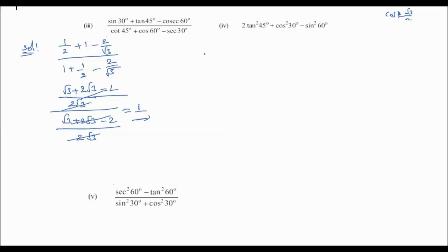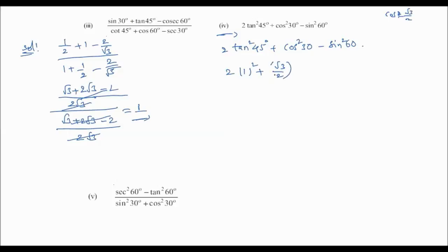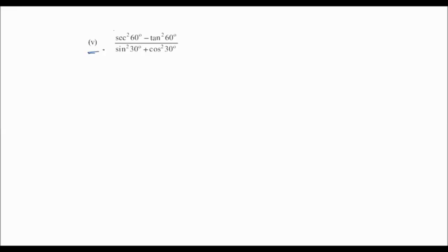Fourth question: 2tan²45 + cos²30 − sin²60. tan45 = 1, so 2×1² = 2. cos30 = √3/2, so cos²30 = 3/4. sin60 = √3/2, so sin²60 = 3/4. We get 2 + 3/4 − 3/4... wait — here 3/4 minus 3/4 cancels, giving answer 2. So the answer is 2.